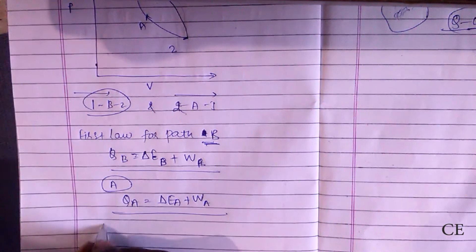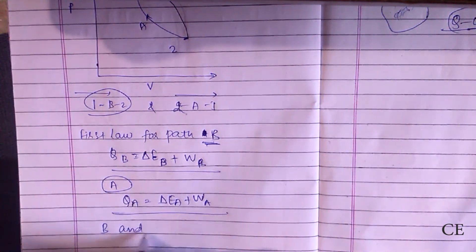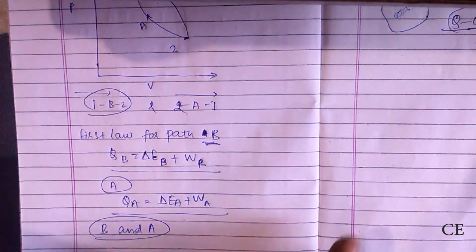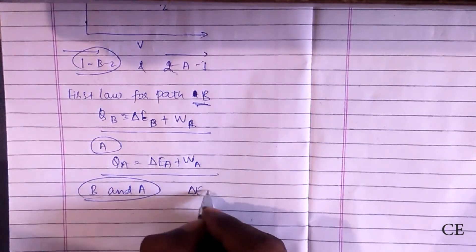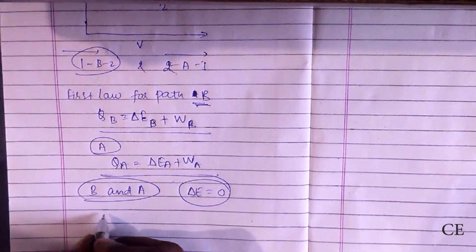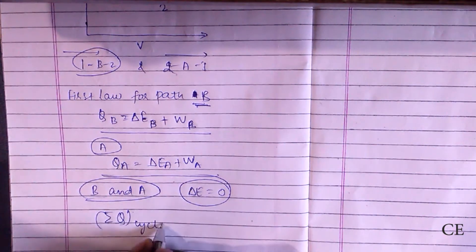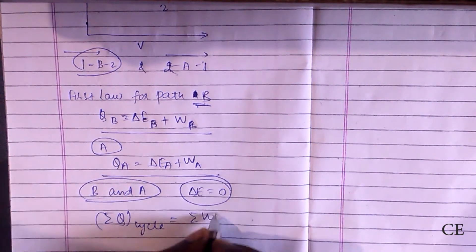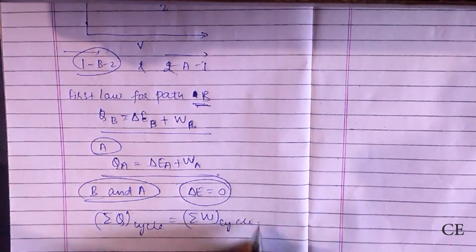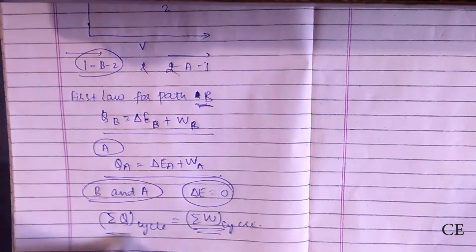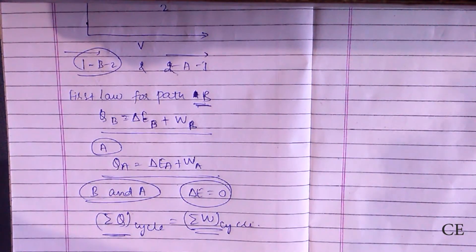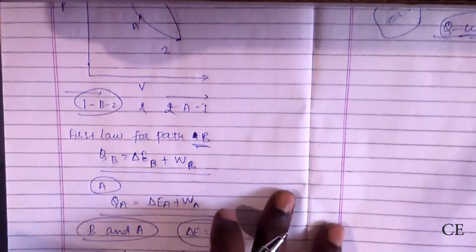B and A act as a complete process, a complete cycle. So for that, delta E would be equal to zero. Summation of Q cycle would be equal to summation of W for the whole cycle.